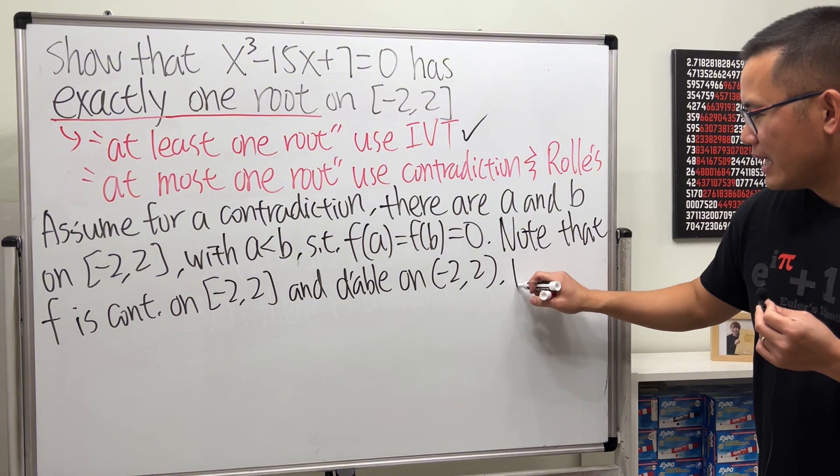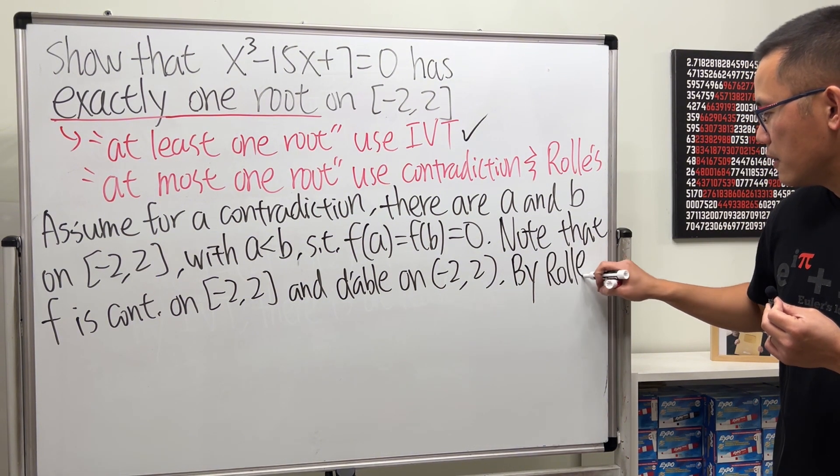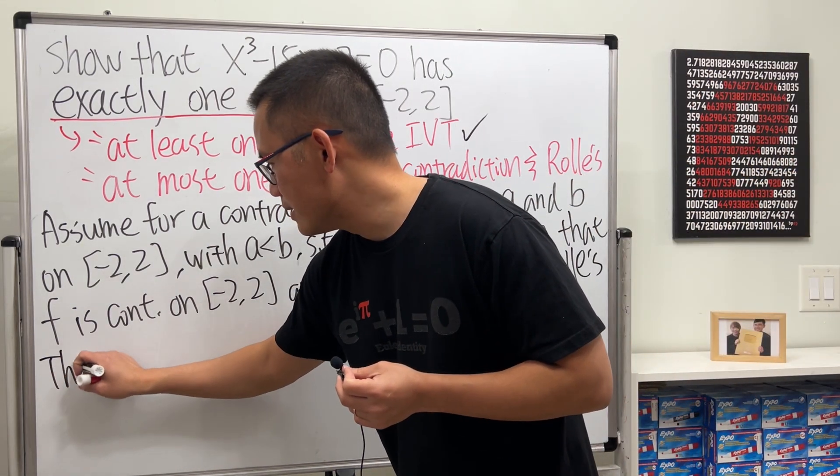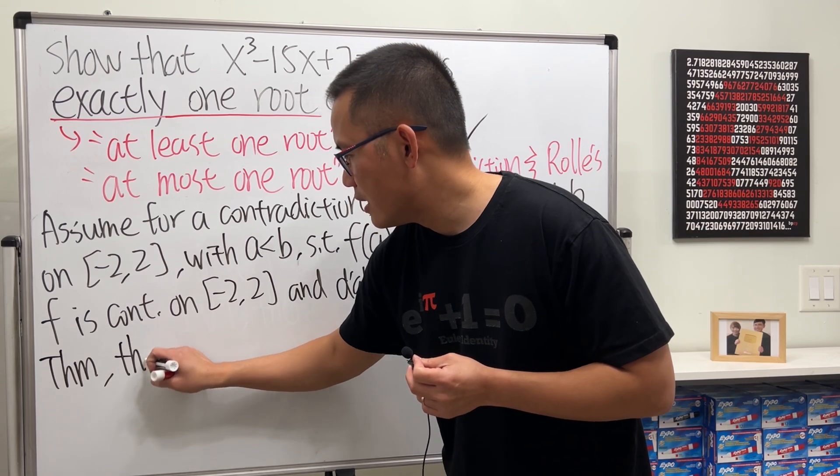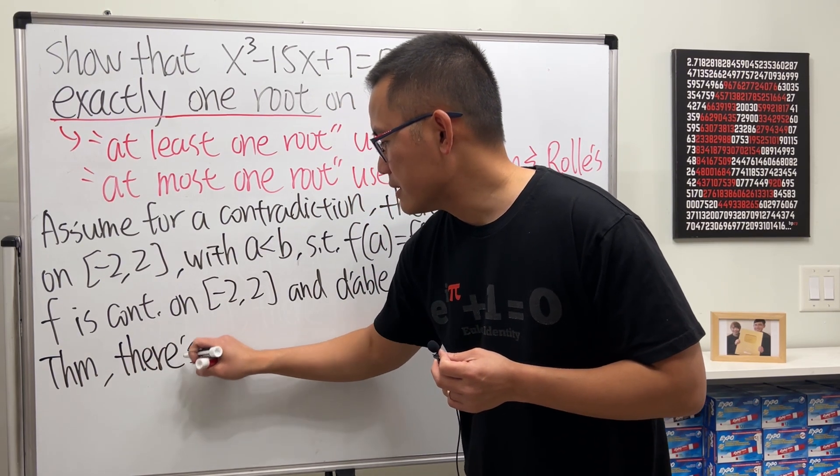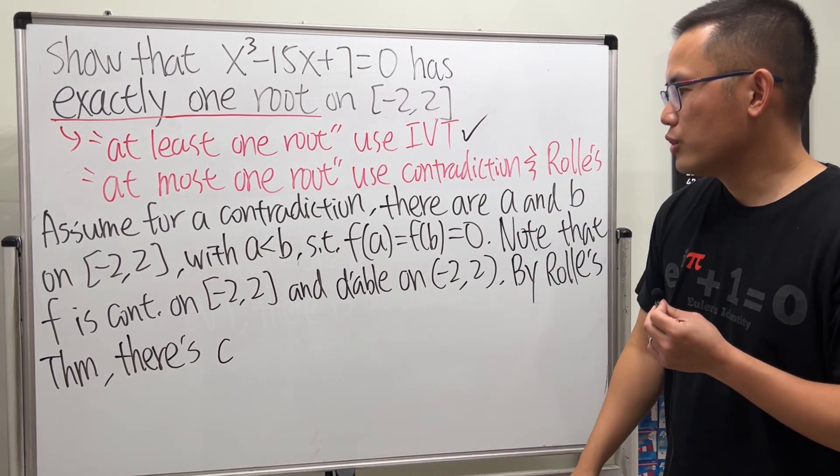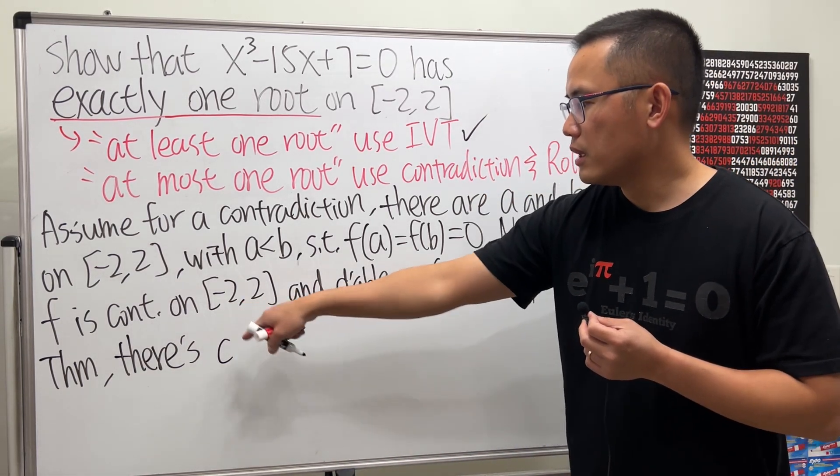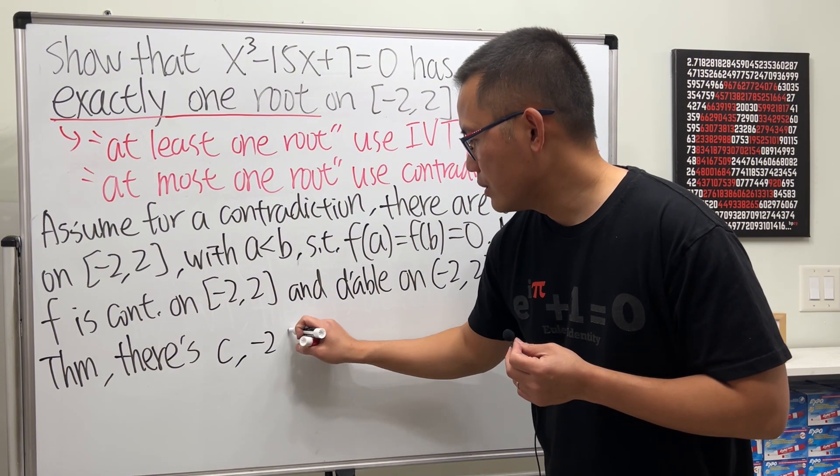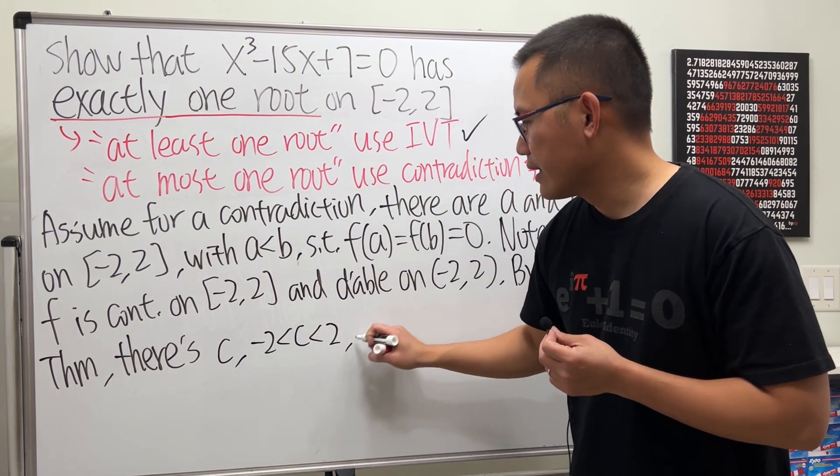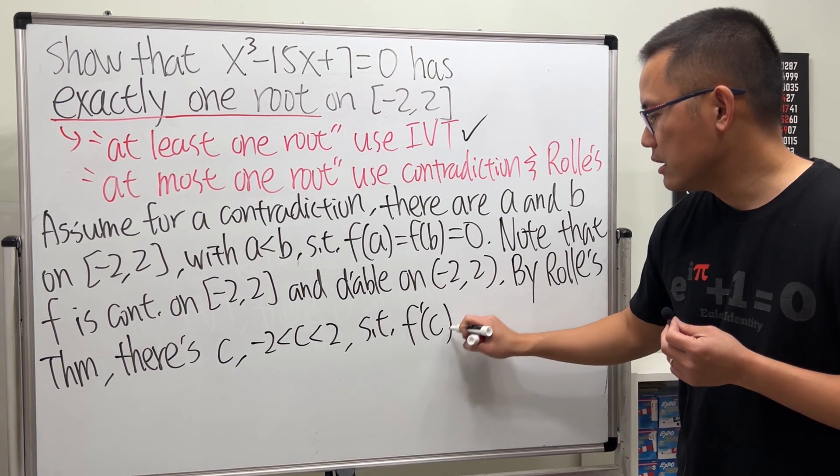Now by Rolle's Theorem—thm stands for theorem—we know that there is some number c, and c is going to be somewhere in between negative 2 and 2, so I just say negative 2 less than c less than 2, such that f prime of c is equal to zero.